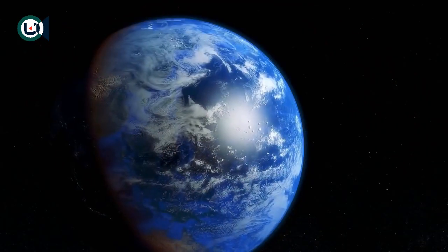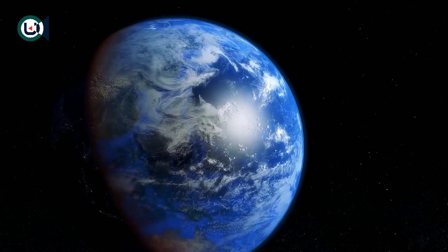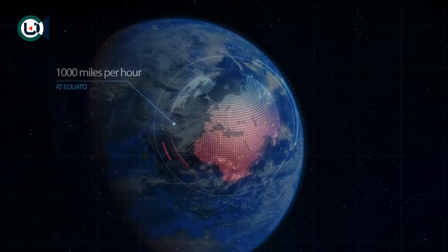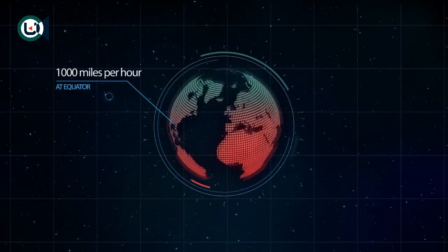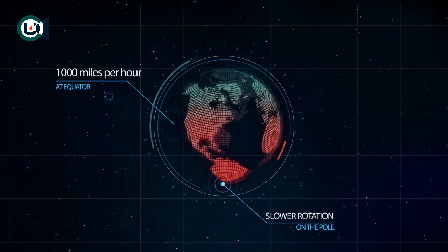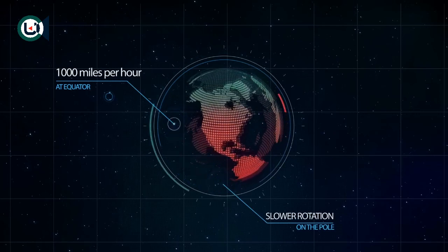But let's just assume for a moment that the Earth did suddenly stop rotating, and take a look at what would happen to us and the planet. Our planet spins at its equator 1,000 miles per hour as it orbits the Sun. But as you get closer to the poles, the rotation is slower.